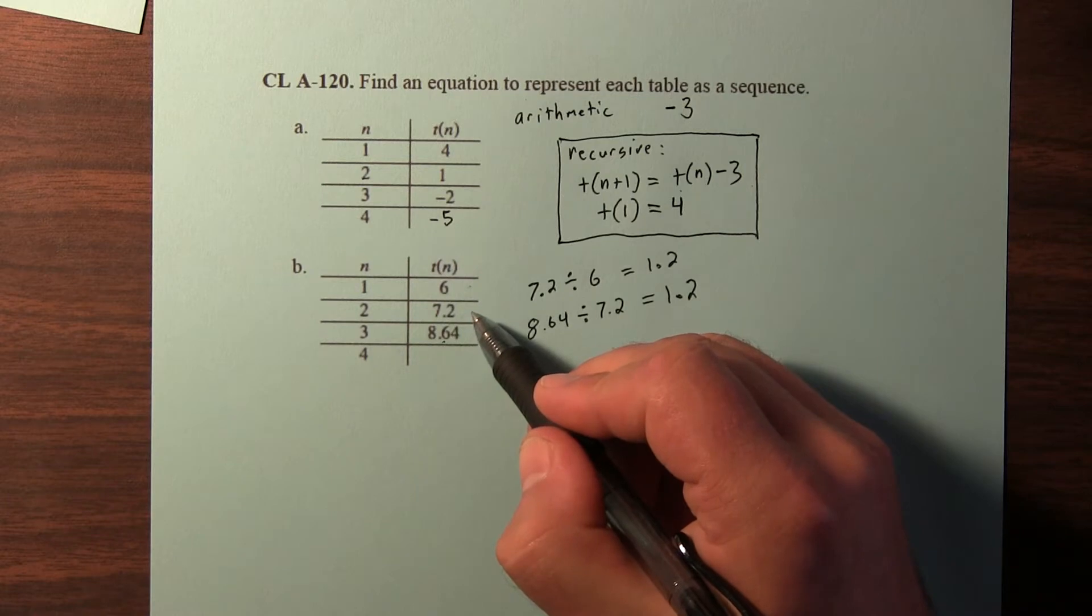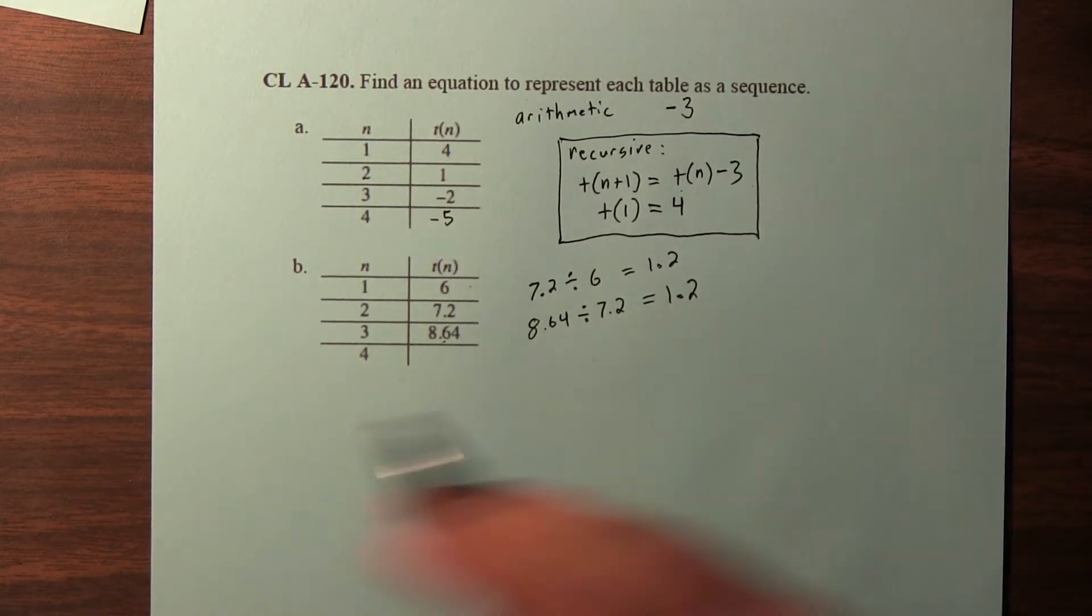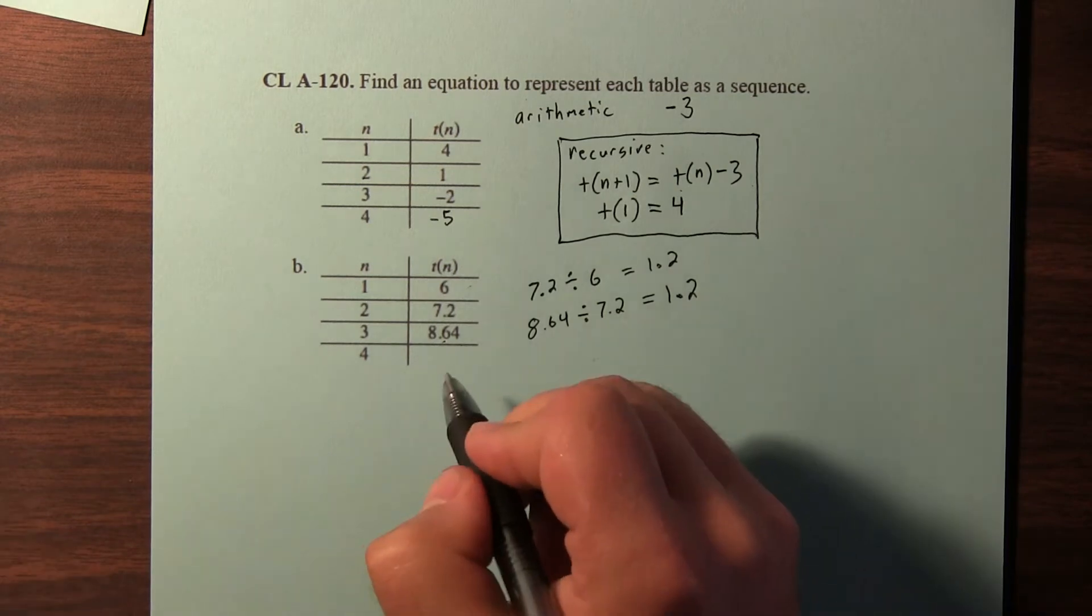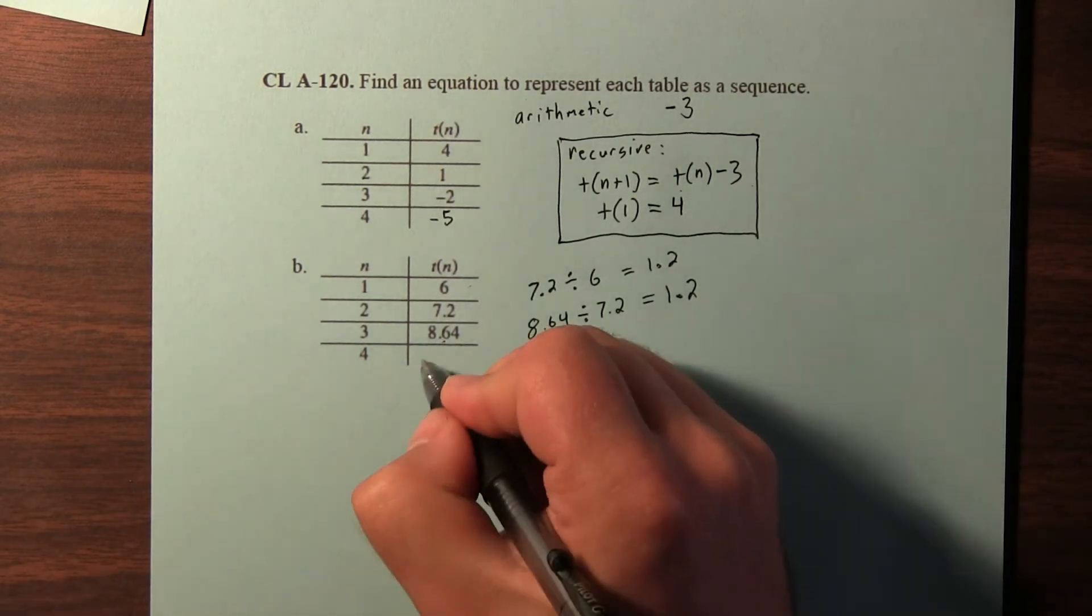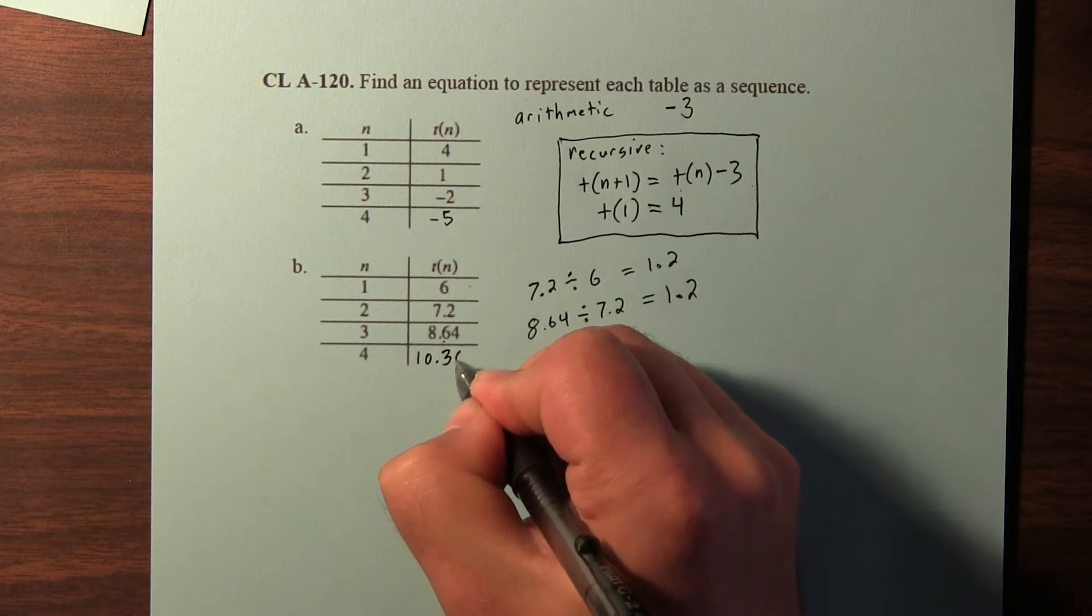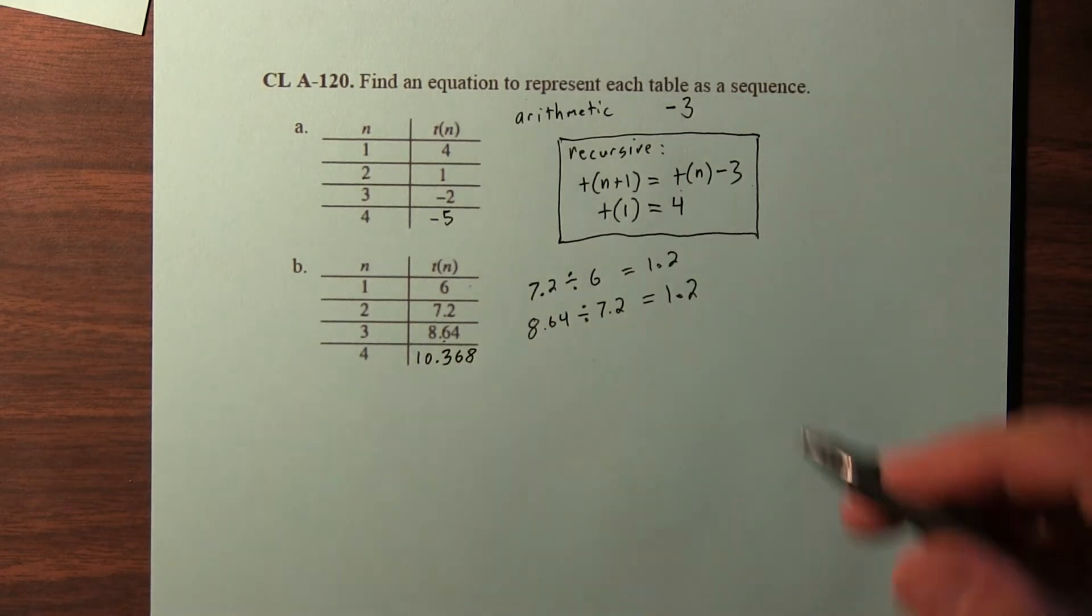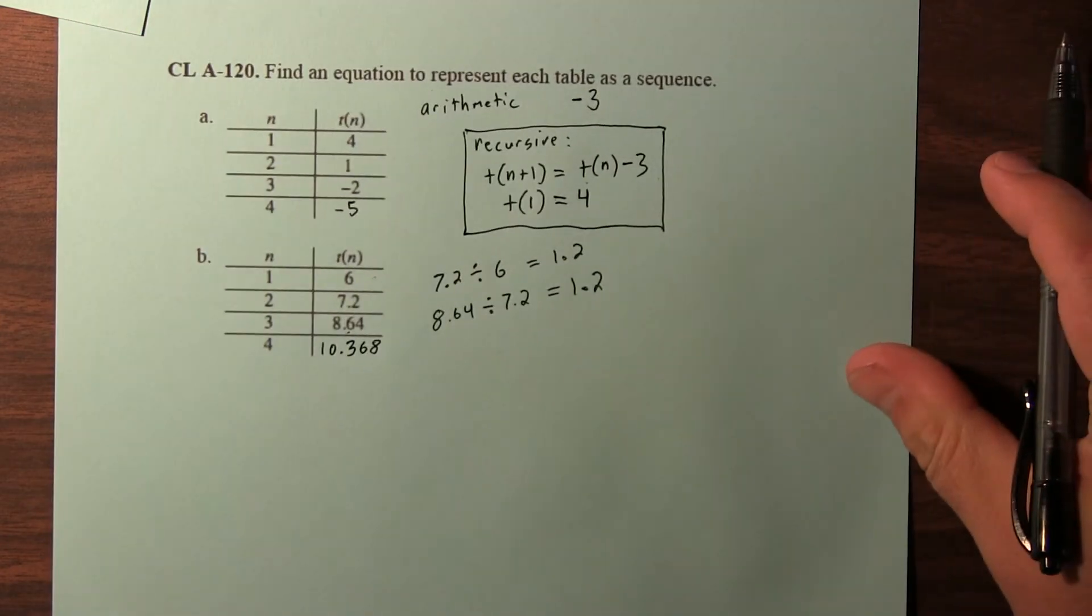So it appears that to get the next term, we multiply by 1.2. 6 times 1.2 is 7.2. 7.2 times 1.2 is 8.64. And actually, if you keep going, 8.64 times another 1.2 would be 10.368. So let's write the recursive equations for this one.